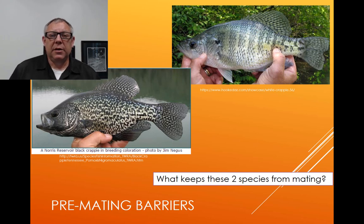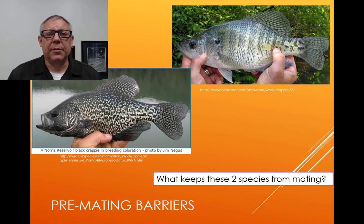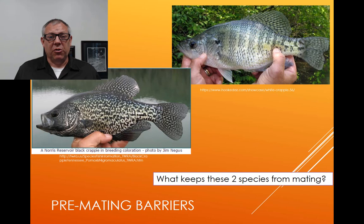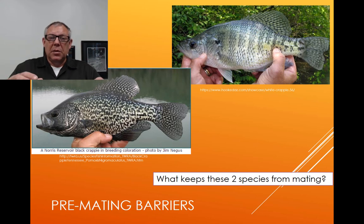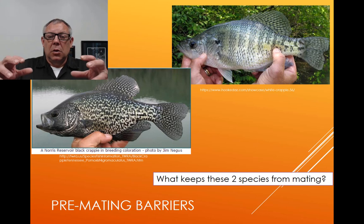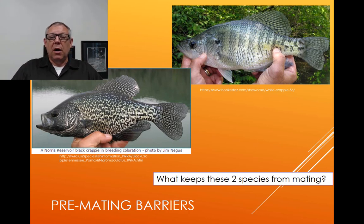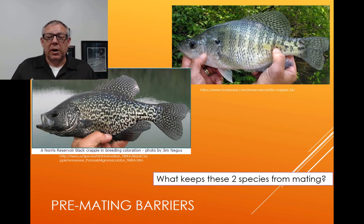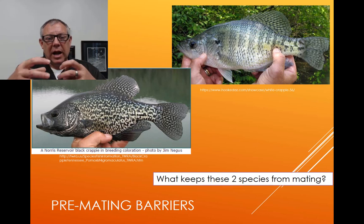Here are a couple more fish — crappie, in the genus Pomoxis. A black crappie on the bottom left and a white crappie on the upper right. What keeps them from mating? One of the big ones is they spawn at different temperatures. Black crappie spawn in cooler water, finish, and move off; then white crappie move in and spawn at a warmer temperature. If you mix the sperm and eggs in a lab, you'll get viable, fertile offspring. But it doesn't happen in nature because of this pre-mating isolating barrier.